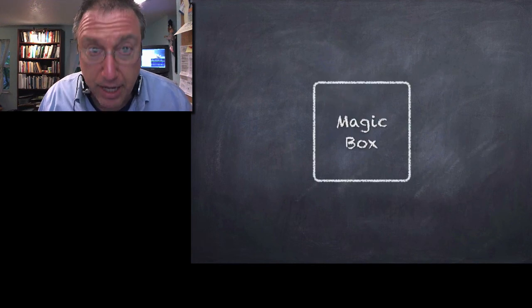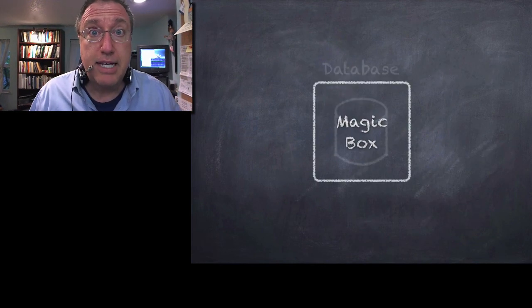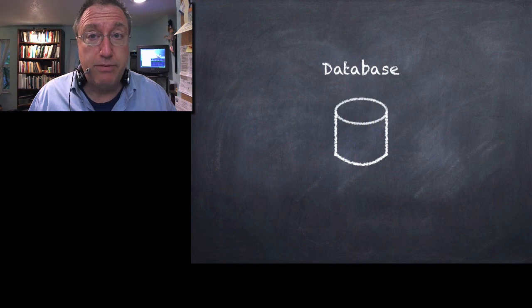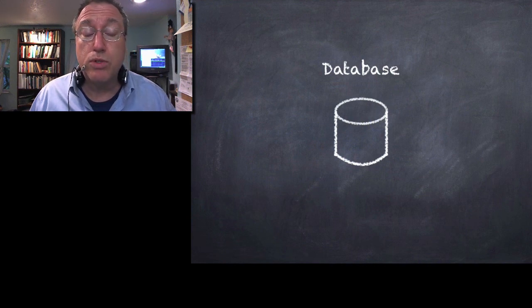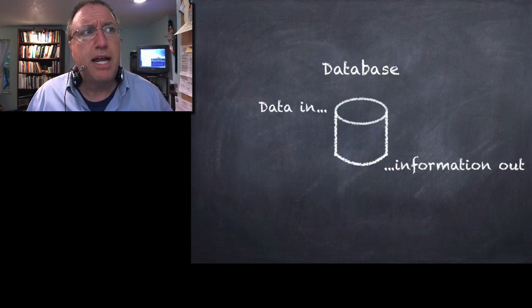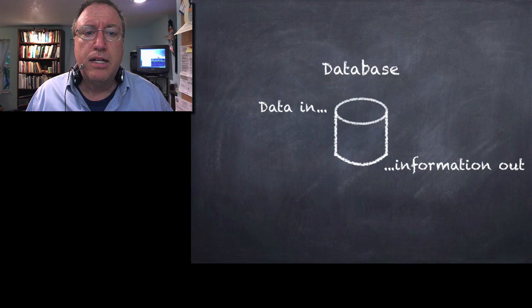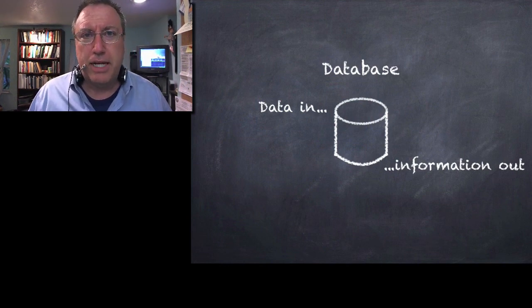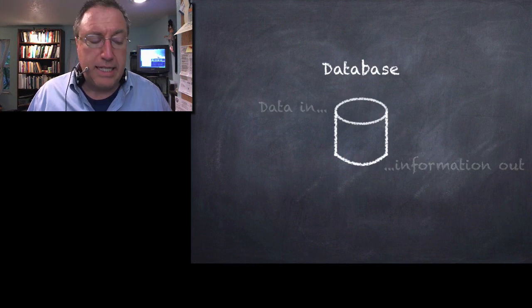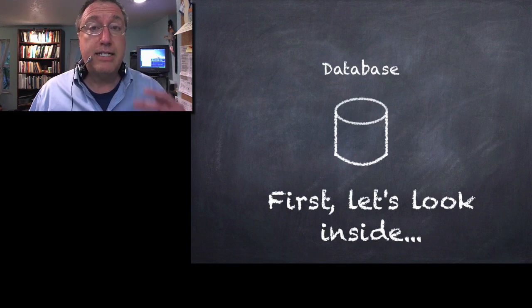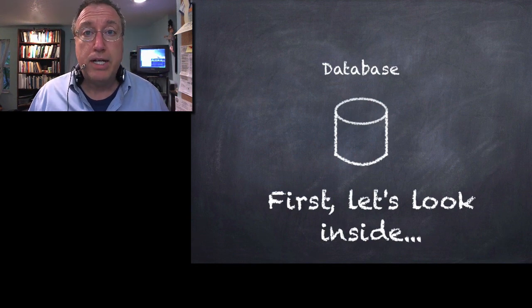Well, if you haven't gotten it by now, this magic box is a database. In our case, it's a relational database. It's a particular kind of database. Your class materials goes through some of the other kinds. But at the very top of things, a database is something that takes data in and puts out information. So, let's get started by looking inside a database and seeing, in a very simplified form, how it's constructed.